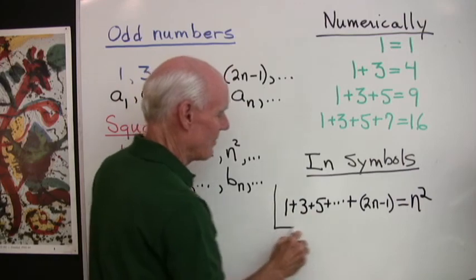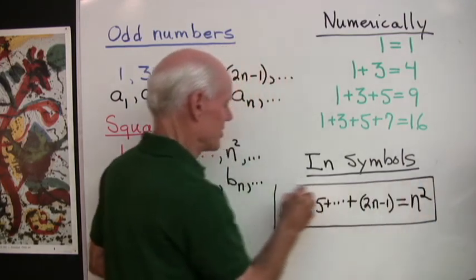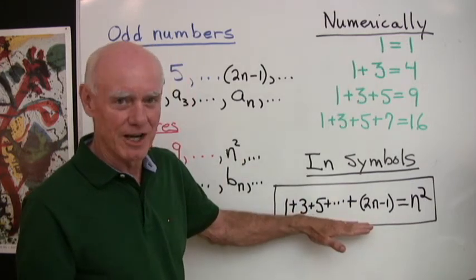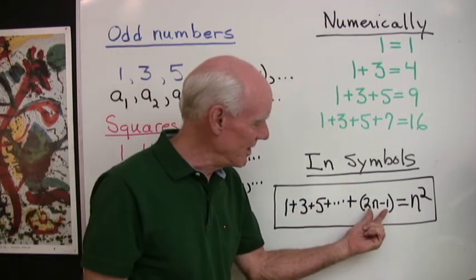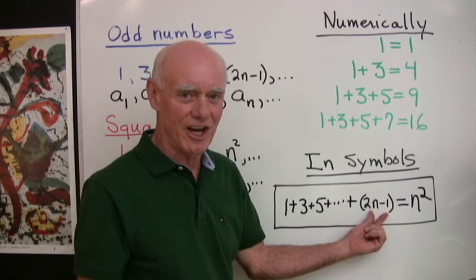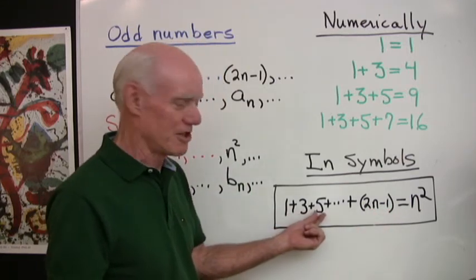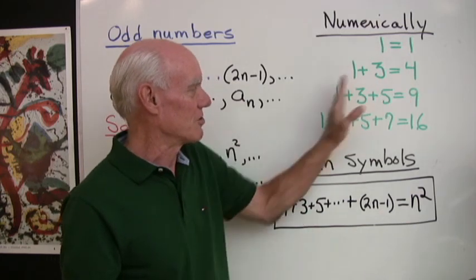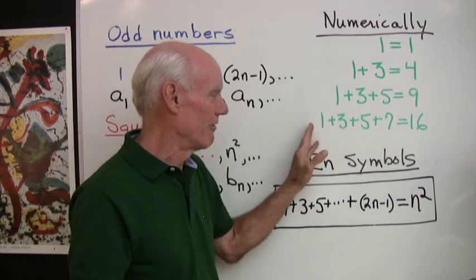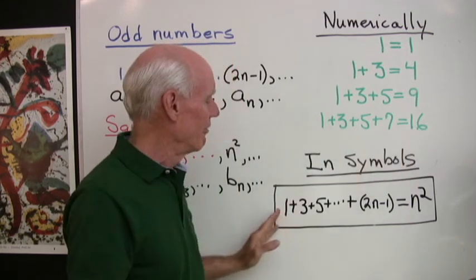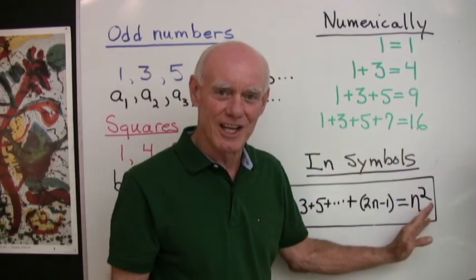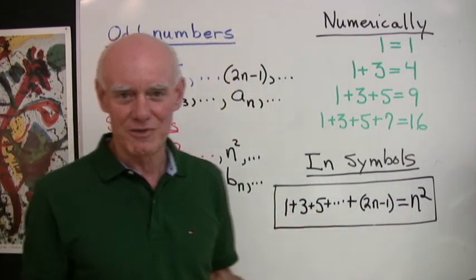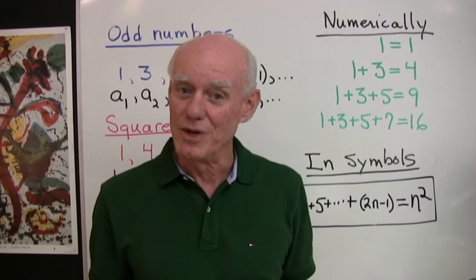So there is that relationship written in symbols. Everything you see up here is contained in this statement. 2n minus 1 is the nth odd number in the sequence. I add the first two odd numbers, I get the second square. First three, third square. First four, fourth square. First n odd numbers, I get n squared. So there is our relationship between the sequence of squares and the sequence of odd numbers written in symbols.